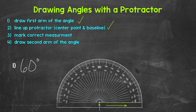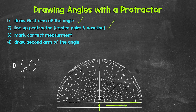Now our protractor is lined up, and we need to mark the correct measurement. For this example, we need 60 degrees. Now there are two 60 degrees on the protractor, so which one do we use? Well, a 60 degree angle is an acute angle, so we need the 60 degrees that will give us that. Or, using the zero degrees from the baseline, the arm of our angle goes through the zero degrees on the inside track of numbers — this tells us to use the inside numbers. So it's going to be this 60 degrees right here, and we need to make a small mark at 60 degrees.